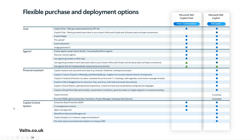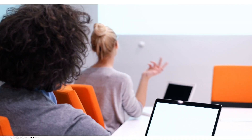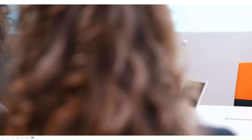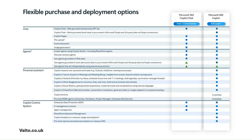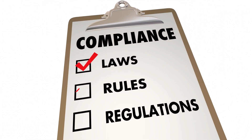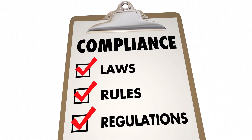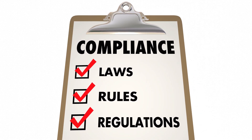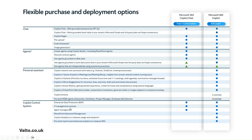One question I often get asked is: what's the difference between the free version of Copilot and something like ChatGPT? If your employees are using ChatGPT, you'll have zero control over what data they're putting out there with no security or governance controls. Whereas by using even the free plan of Copilot, you get enterprise data protection, IT management controls, and agent management all built in.